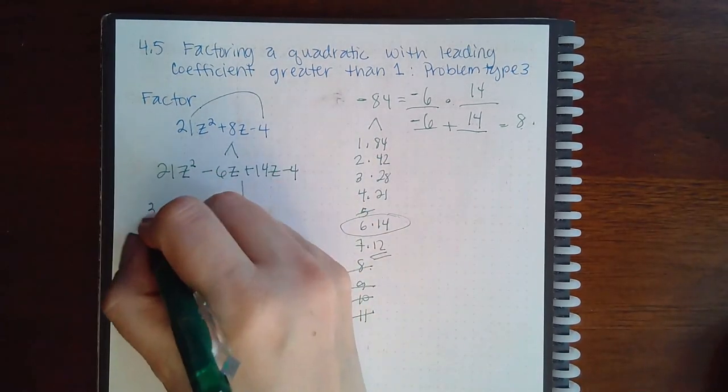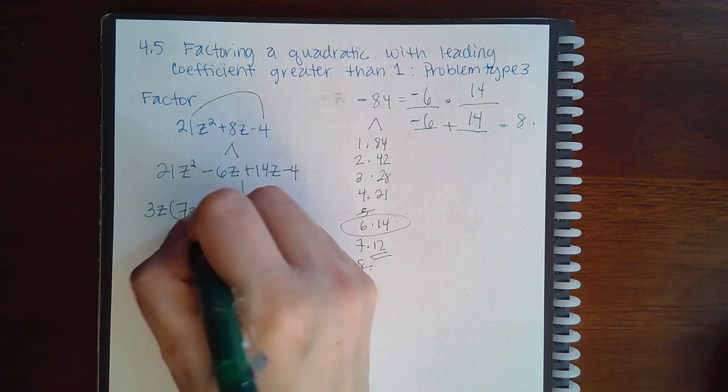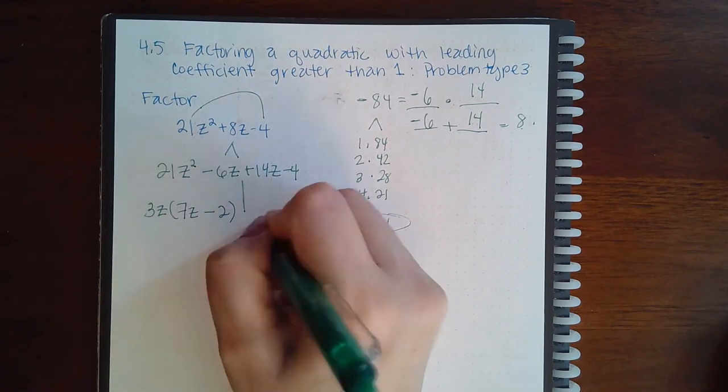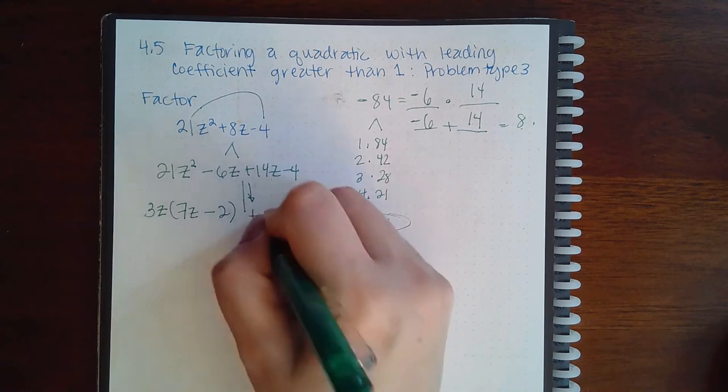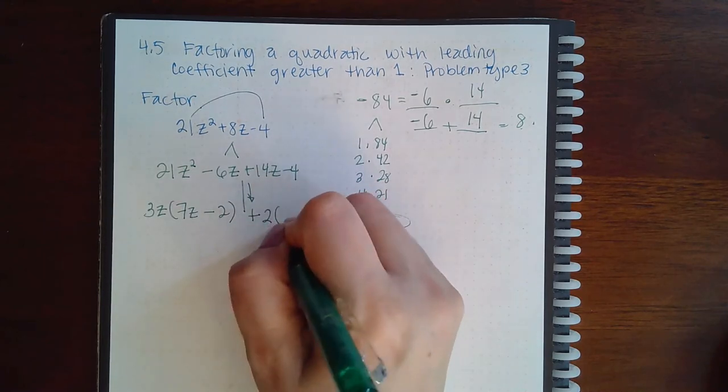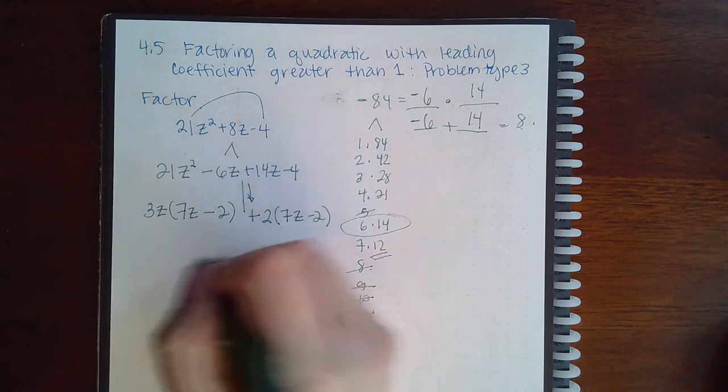So these guys can be divided by 3 and a z, which leaves me with 7z minus 2. Bring down the plus sign. These guys can be divided by 2, which leaves me with 7z minus 2.